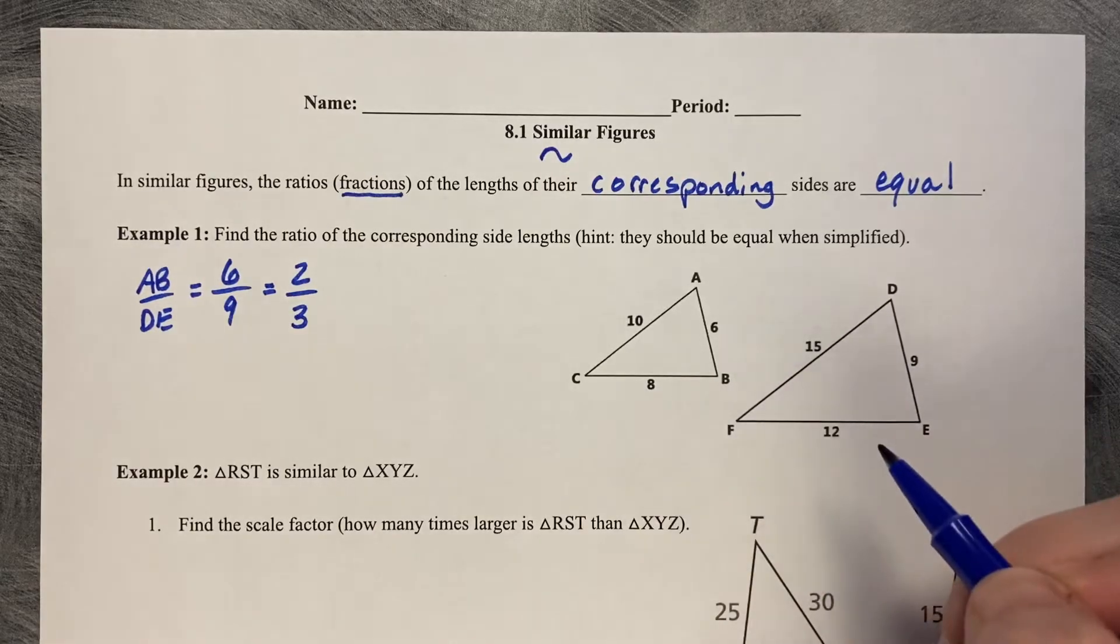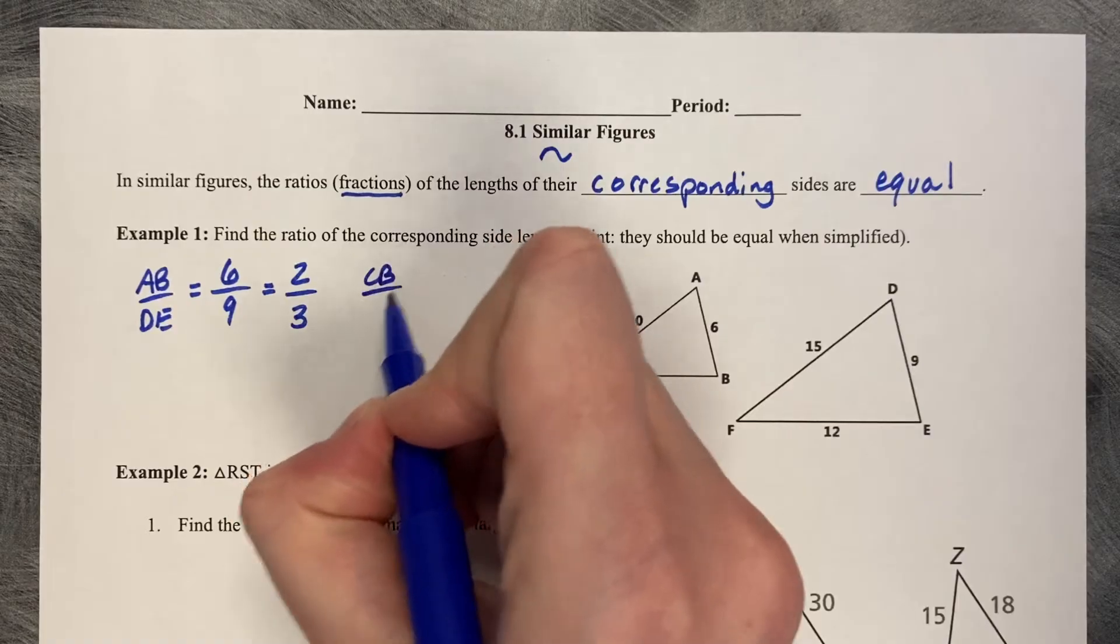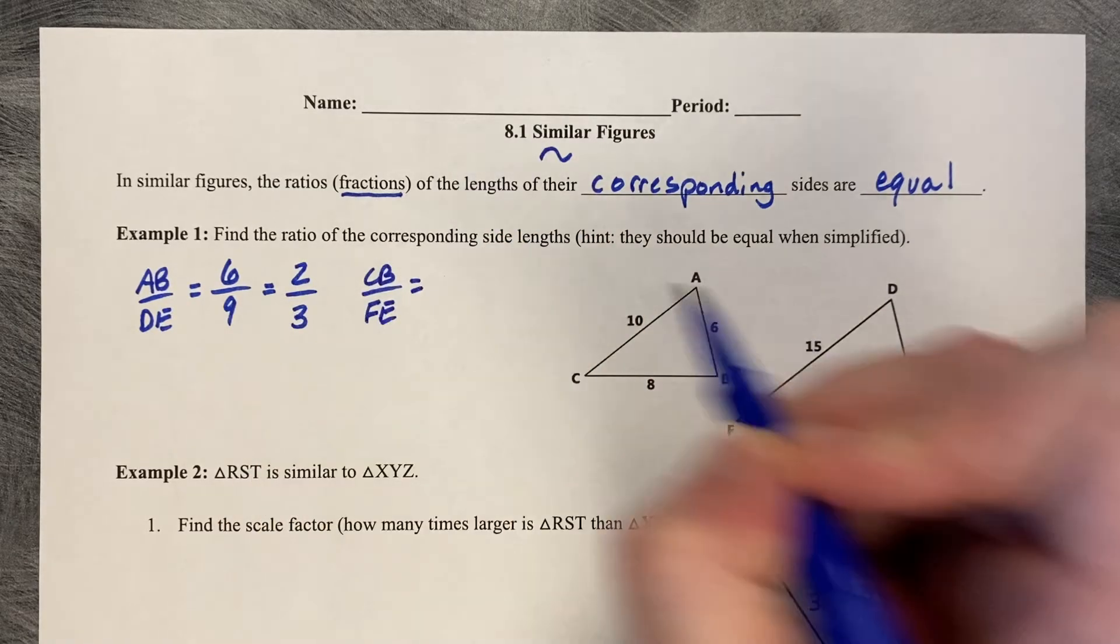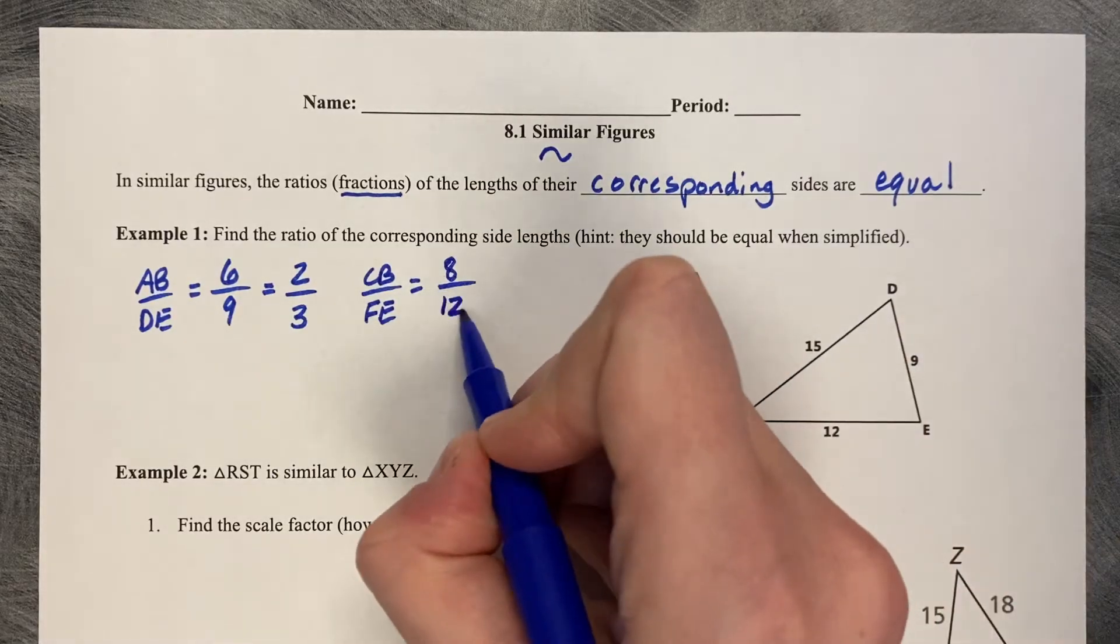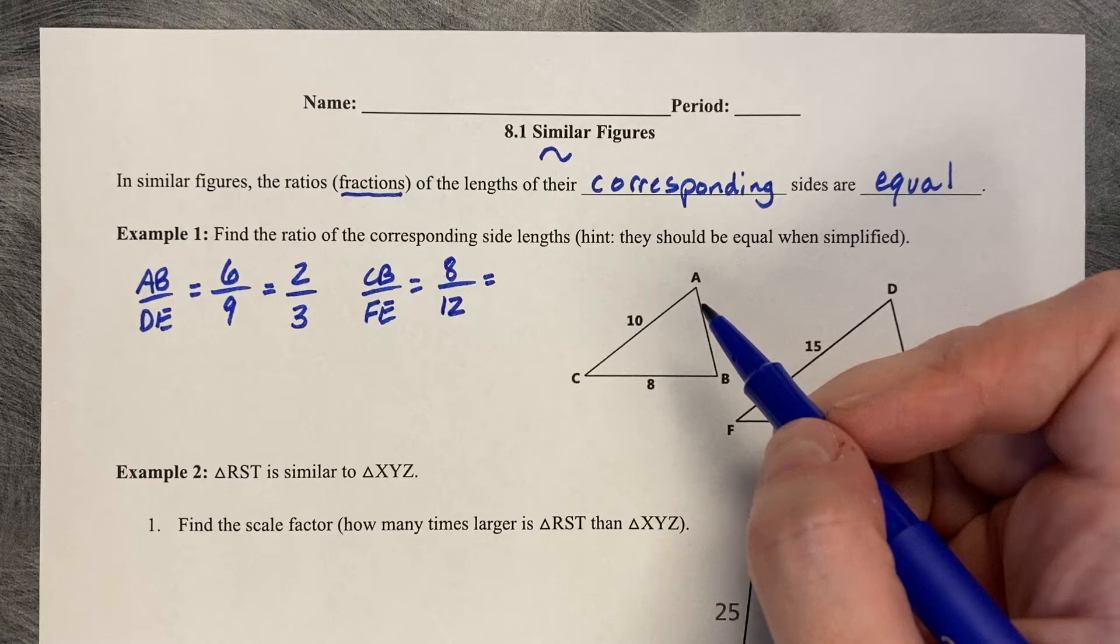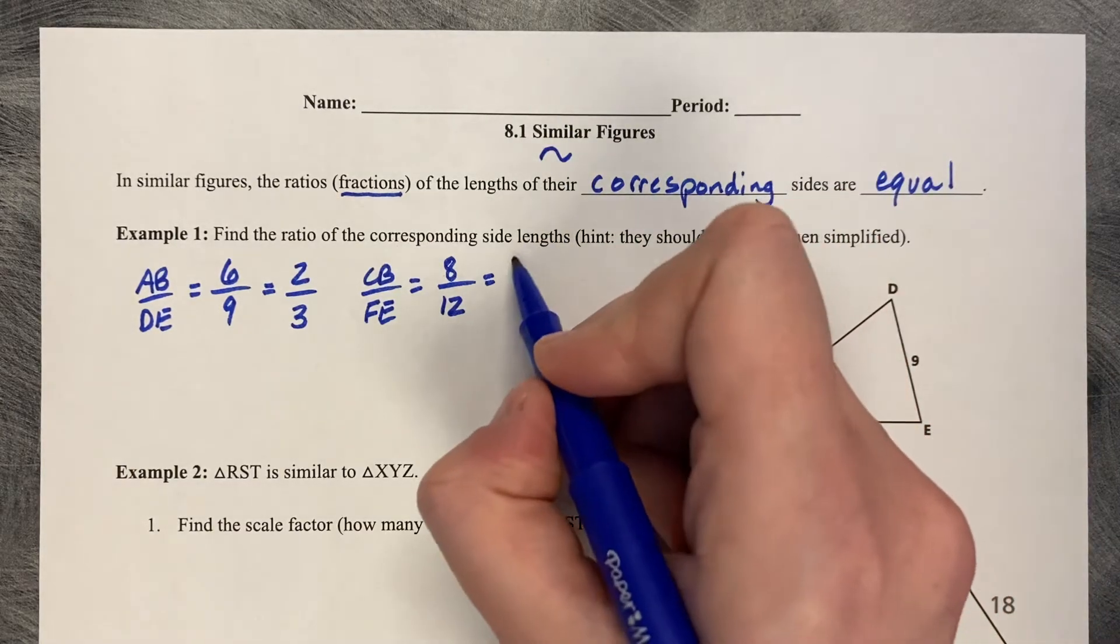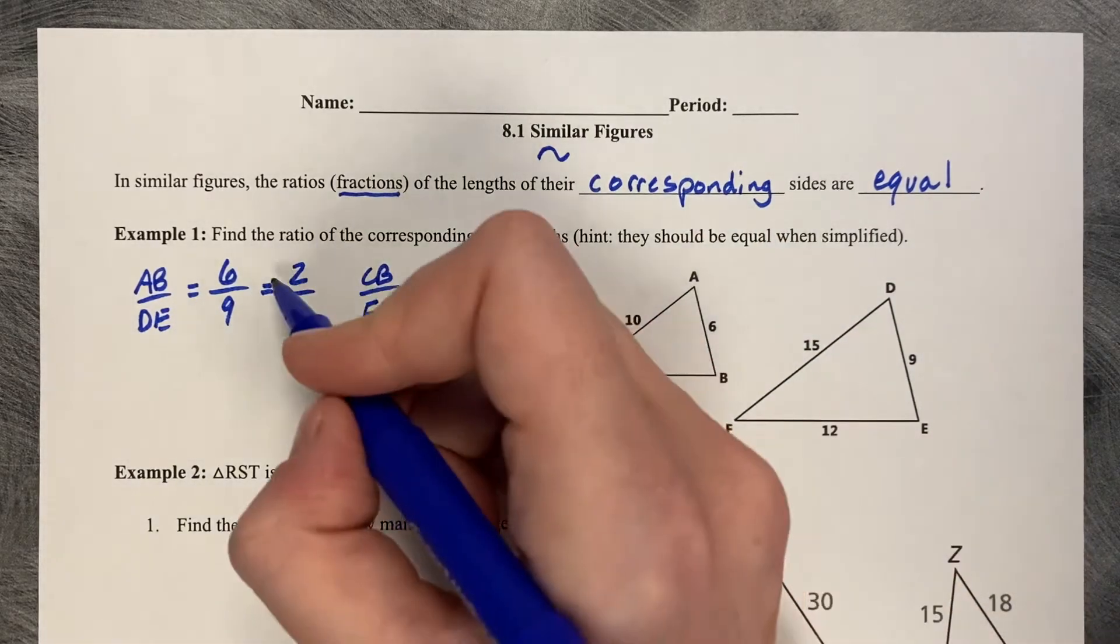Let's see if that applies to all three sides. So now let's do CB to FE. CB is 8, FE is 12. 8 and 12 both divide by 2, so that becomes 4 over 6. But that divides again. 4 over 6 divides by 2, so 2 over 3. Oh good! We're getting a consistent ratio.